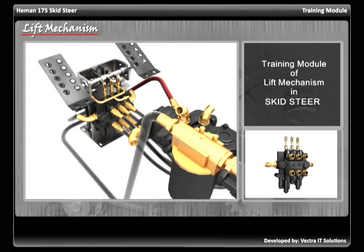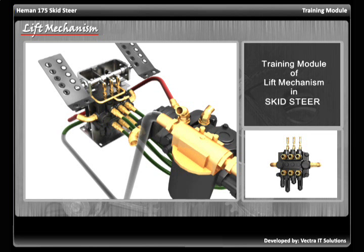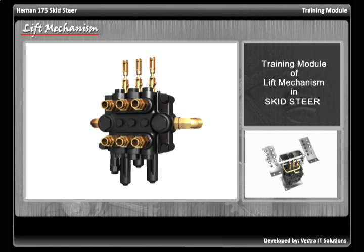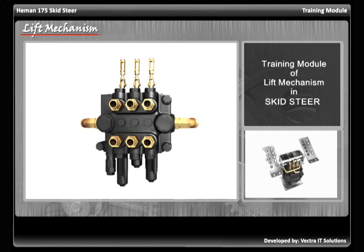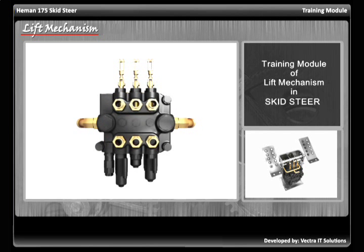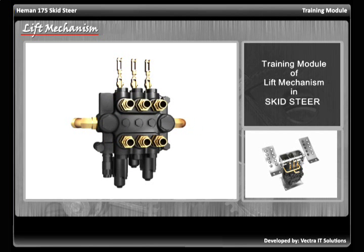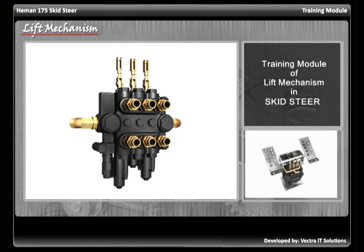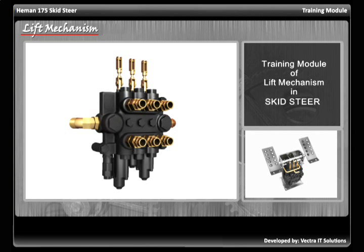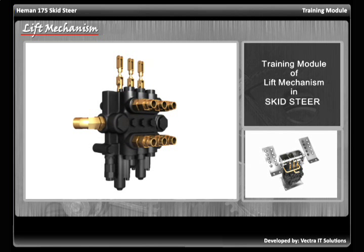The valve block acts as a gate and directs the transfer of oil to the three lift circuits according to the choice of the operator. Taking a closer view of the valve block, we can see eight input-output ports for the flow of oil in and out of the valve block.